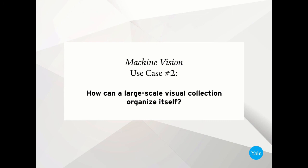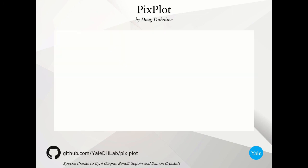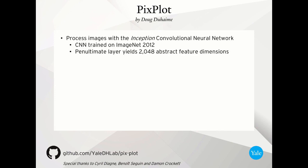For the second example of a real-world use case where machine vision might be useful, let me give you the case of how a large-scale visual collection might be able to organize itself. And that may seem sort of like a strange way to put it. We're not used to thinking of data as having its own autonomy. But what I want to explore in this particular set of slides is a tool that we've been working on inside the Digital Humanities Lab called PixPlot, which is authored by Doug DeHaine.